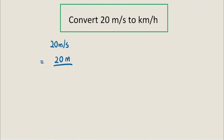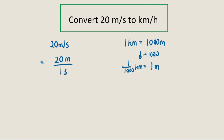So 20 meters per second can be written as 20 meters divided by 1 second. We'll individually convert the 20 meters and 1 second to kilometers and hours respectively. Since 1 kilometer equals 1,000 meters, dividing both sides by 1,000 gives us 1 meter equals 1/1,000 kilometers.